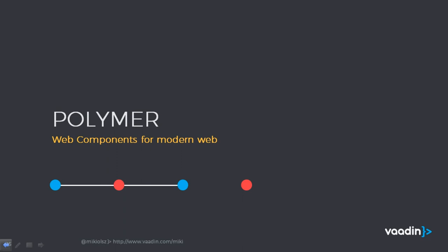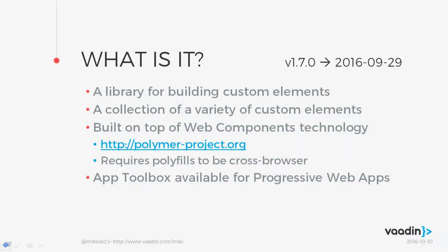There is a reference implementation library called Polymer — web components for the modern web. The latest version is from September 29th. It's a library for building custom elements containing a significant number of already-defined elements that fit 99% of business cases. It's built on top of web components, so it requires polyfills to be cross-browser — you can't just import Polymer and be done; you also need polyfills. There is a separate app toolbox for building progressive web applications.